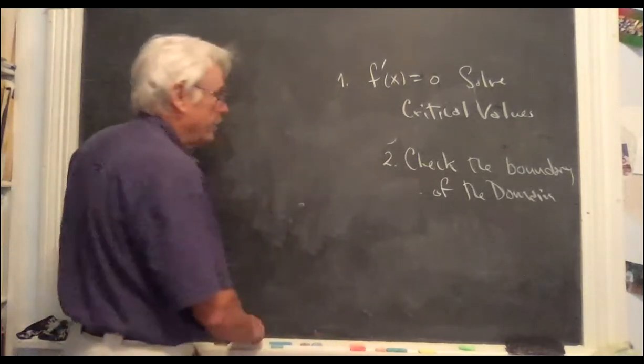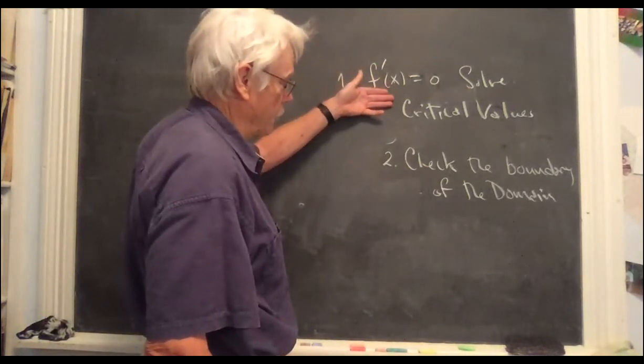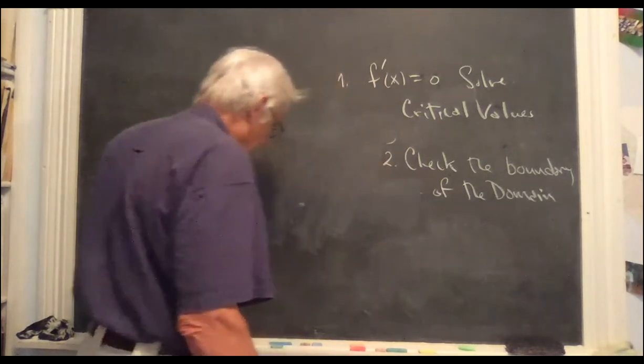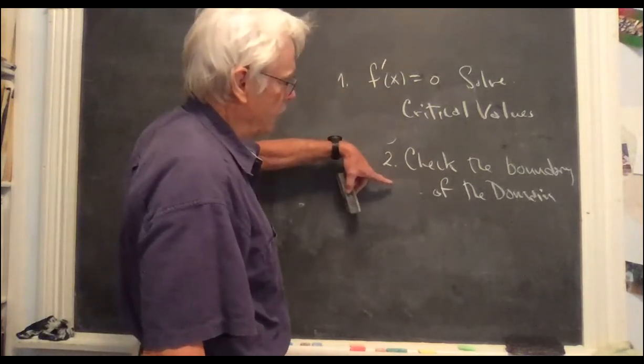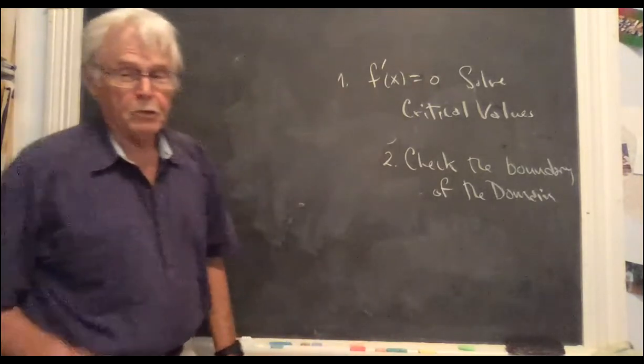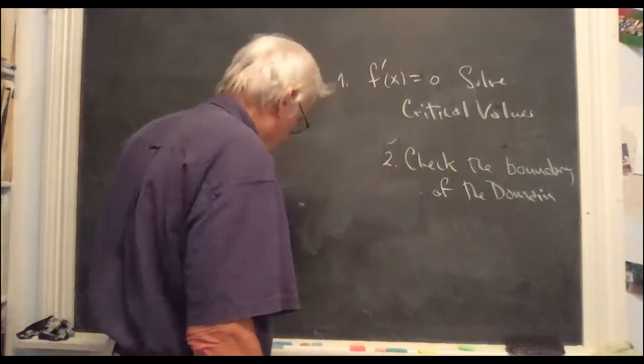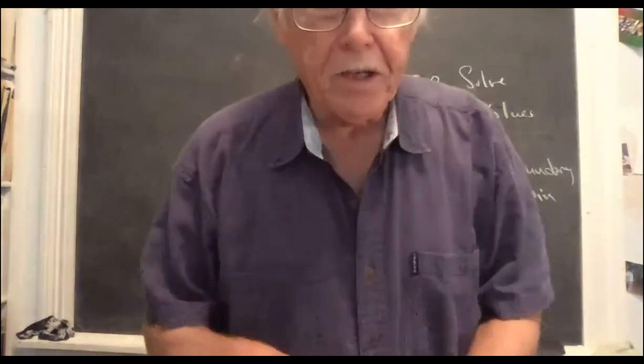This is called a two-dimensional interval over such intervals. But the solution is exactly the same. You find the derivative, you set it equal to zero and solve. This gives you the critical values. And then you check the boundary of the domain. So the boundary of the domain suddenly becomes the more difficult part.